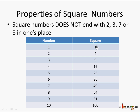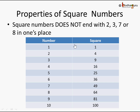Now let's look at certain properties of square numbers. If you observe all these squares, you will never find a square number ending with 2, 3, 7, or 8 in the ones place. The ones digits you see are: 1, 4, 9, 6, 5, 6, 9, 4, 1, 0 — you will not find squares ending with 2, 3, 7, or 8. So this is one important property: if you are given a number like 162, you can say it is not a square number because it ends with 2. Similarly, 363 cannot be a square number because it ends with 3.